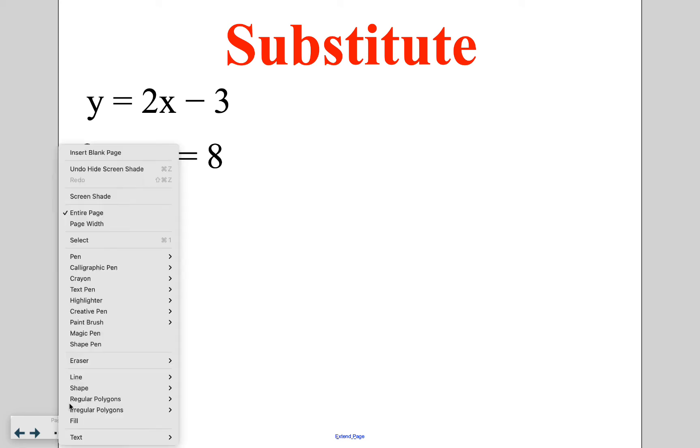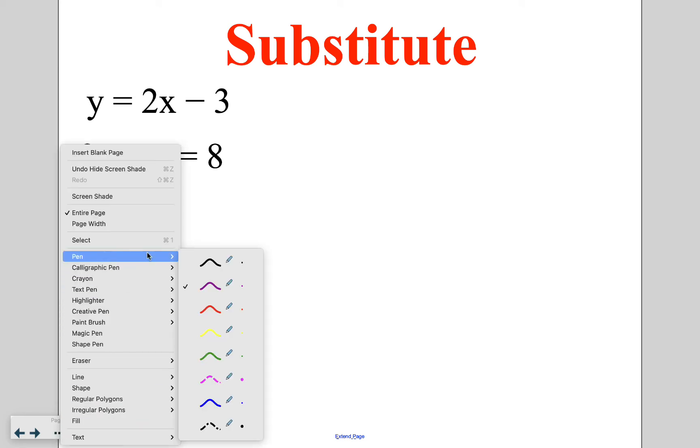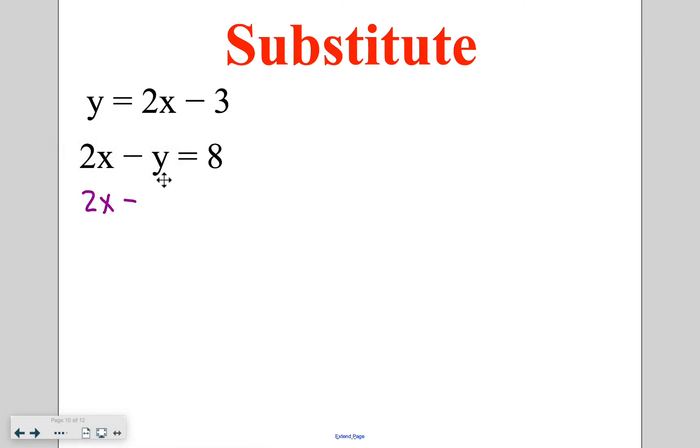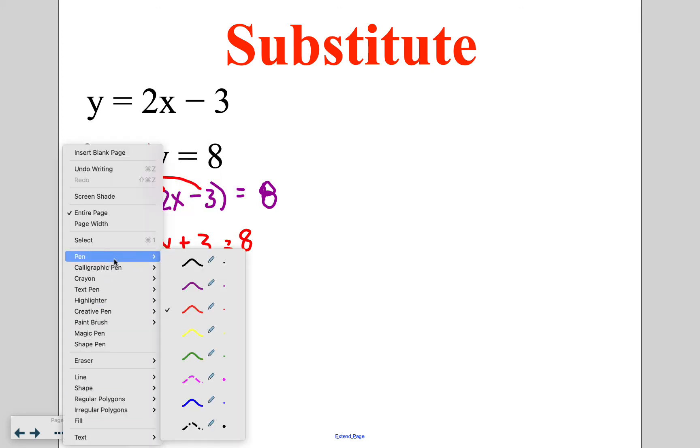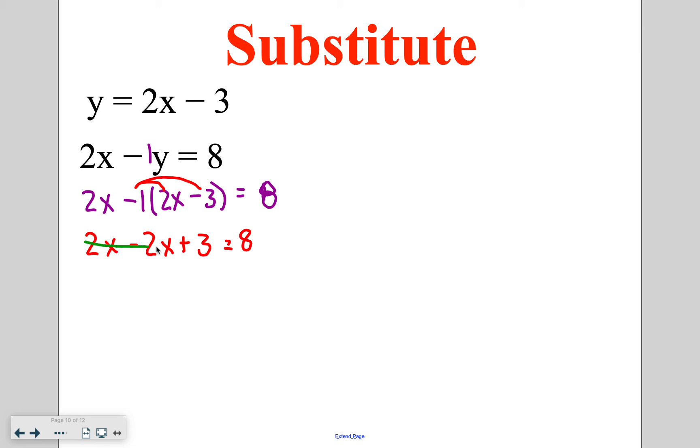On this one, when I substitute for my y, which is already solved, I have that 2x minus, now remember, if there is a variable by itself, it means there is a coefficient of 1 there. So I've got negative 1, and then in parentheses, 2x minus 3 equals 8. So when I distribute, we're going to distribute that negative 1, and I have 2x minus 2x plus 3 is equal to 8, distributing that negative 1 to both pieces. Now when I combine my variables this time, I end up with 2x minus 2x, which eliminates my x's from the problem, giving me that 3 is equal to 8.